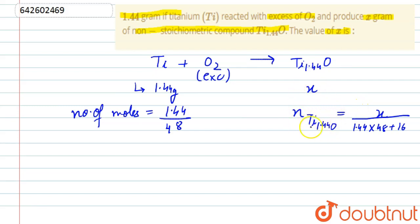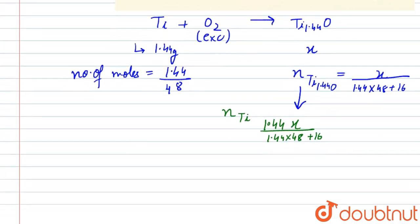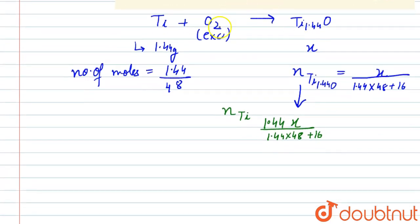In this many moles of titanium oxide, the number of moles of titanium present will be that quantity multiplied by 1.44. So the moles of titanium on the right-hand side of the reaction will be 1.44x divided by (1.44 × 48 + 16), applying the principle of atomic conservation.